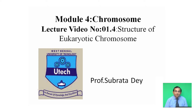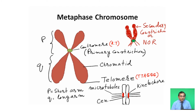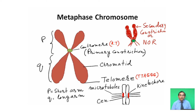In this module I will discuss the structure of the eukaryotic chromosome. A metaphase chromosome consists of two chromatids, a primary constriction also known as the centromere, and a secondary constriction or nucleolar organizing region.